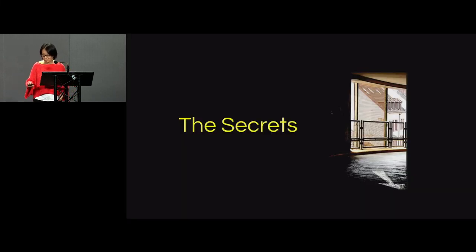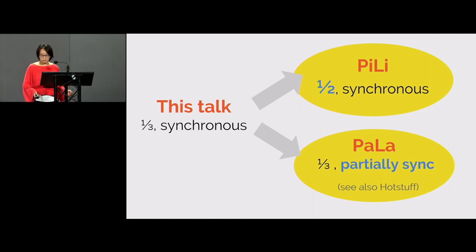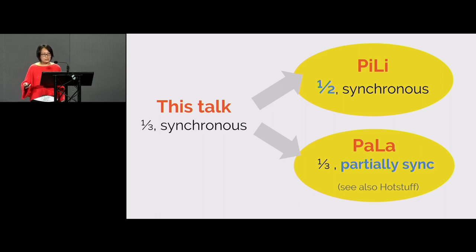Now is the time to reveal a couple of secrets. I talked about a protocol that tolerates less than one-third corruption and is secure in the synchronous model. Pili improves the resilience parameter to one-half and also works in the synchronous model, since one-third is not tight for synchrony. Pala tries to improve robustness in a different dimension, tolerating arbitrary network partitions by working in the partially synchronous model. I also want to mention another very beautiful work called Hot Stuff by Abraham et al., which is another instantiation of this paradigm in the partially synchronous model. The protocol I described in this talk is partly inspired by the beautiful Hot Stuff work.